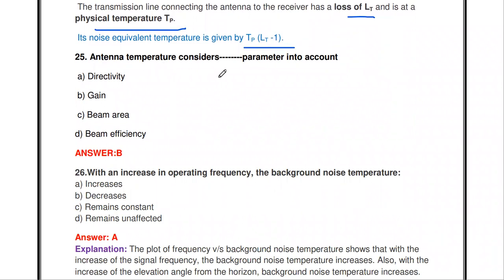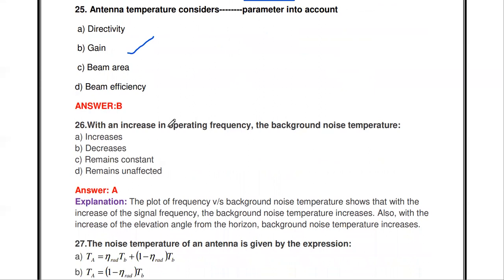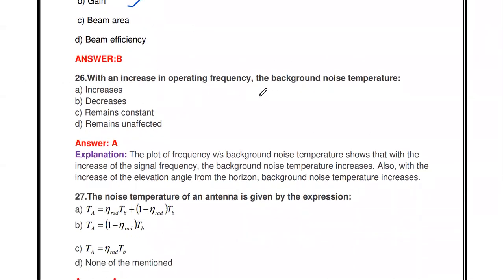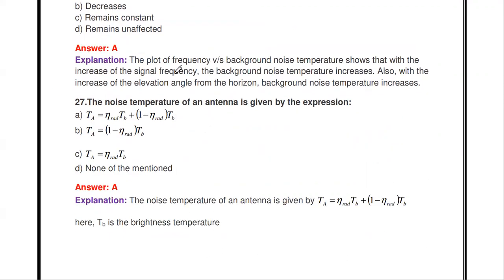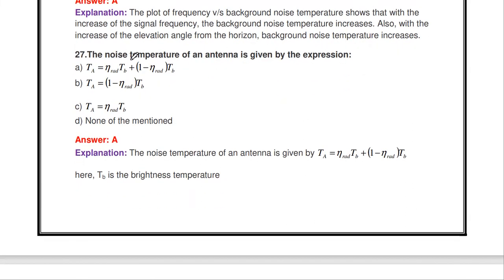Next question: the antenna temperature considers which parameter — directivity, gain, beam area, or beam efficiency? Antenna temperature considers the gain parameter. Also: with an increase in operating frequency, the background noise temperature increases — it increases with increasing frequency.